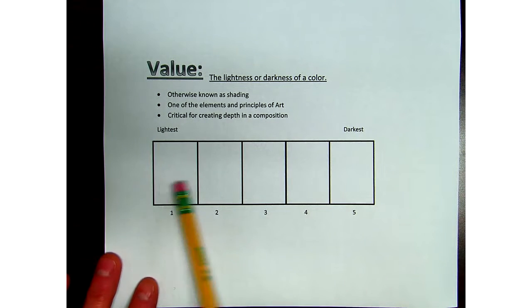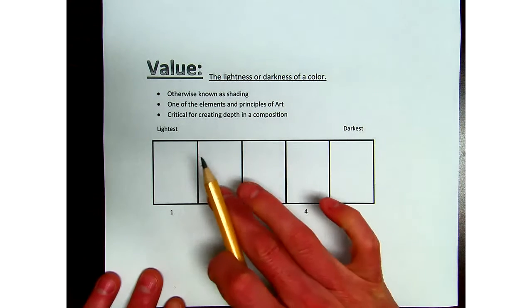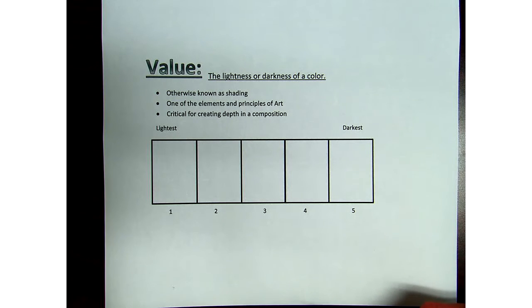And then as we amp up from 1, 2, 3, 4, and 5, we want to make it a shade darker every time we go up. So the goal of this is when you're finished, you should be able to squint at your value scale and not see any strong differences in value variations.